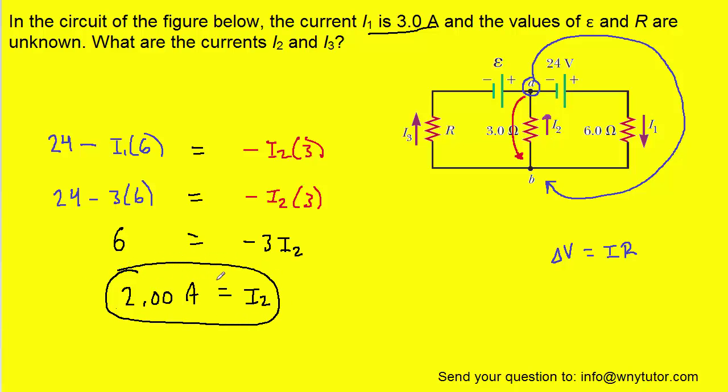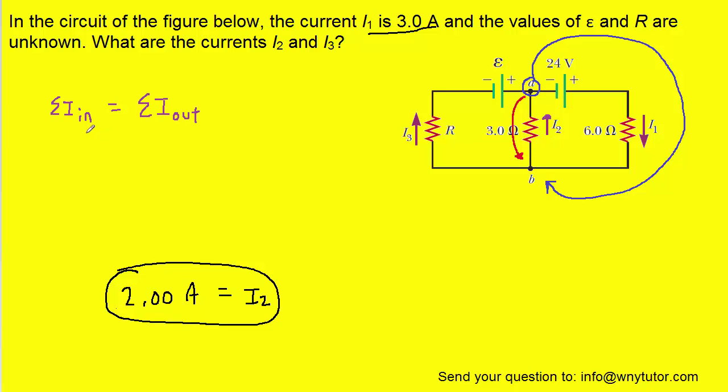In order to solve for the current labeled I3, we can apply Kirchhoff's junction rule, and we can do that at either junction A or junction B. Let's go over to junction A and see how to apply that rule. That rule states that the total current going into the junction is equal to the total current going out.